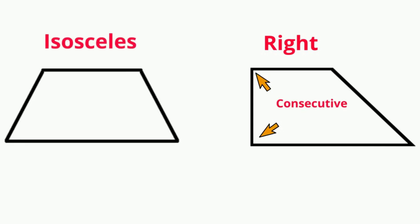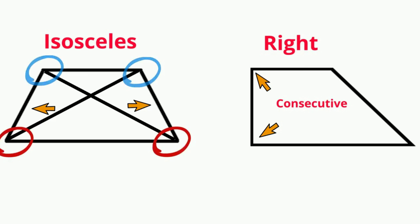An isosceles trapezoid has two equal legs, which results in the diagonals being equal. The base angles are congruent, or equal.